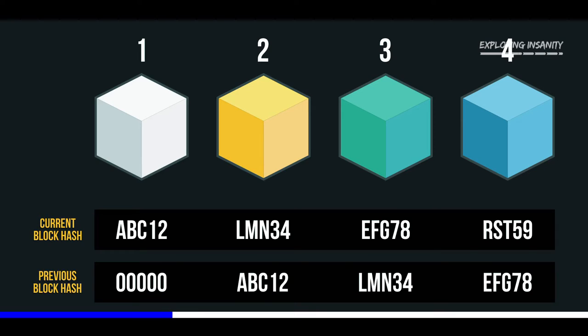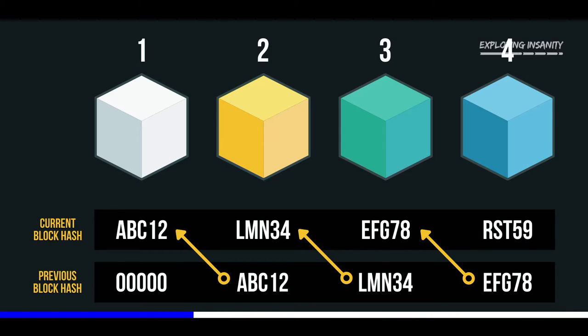To understand, let's consider these four blocks. Every block has its own hash code and a hash code of its previous block. The fourth block points towards the third block, the third block points towards the second block, and the second block points towards the first block, forming a chain.